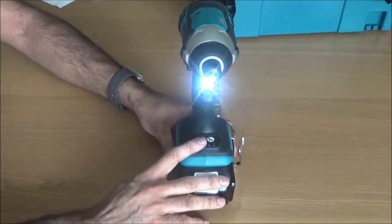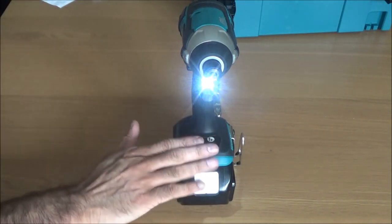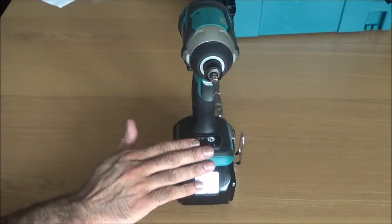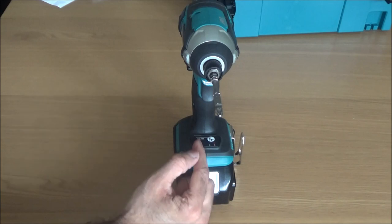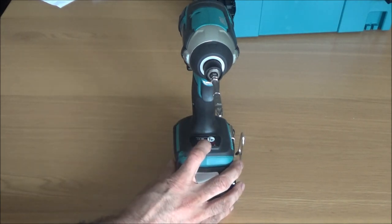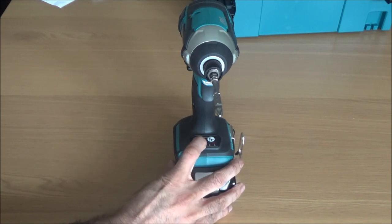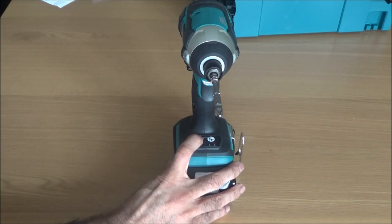That's that. And then now the second thing, it's a three selection speed and it's got a T-mode. Now they're really banging on about the T-mode. I'll explain what that is. So first of all, it's got your slow mode, that's for like doing your work around the house. Then it's got your medium, then it's got the high.